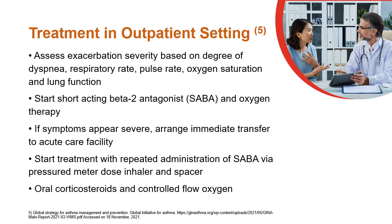In outpatient settings, severity of exacerbation must be assessed based on degree of dyspnea, respiratory rate, pulse rate, oxygen saturation, and lung function, while starting short-acting beta-2 agonist and oxygen therapy. If symptoms appear severe, arrange immediate transfer to an acute care facility and start treatment with repeated administration of short-acting beta-2 agonist via pressurized metered-dose inhaler and spacer. Oral corticosteroids and controlled-flow oxygen must be administered as required.